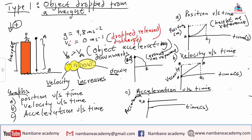So the very first one will be an object that is now dropped. Object dropped from a certain height, so that will be type number one.